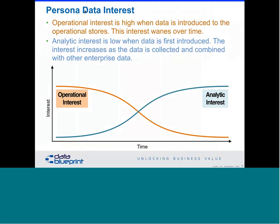If you notice where the lines cross versus where they start out: for the operational interest, the interest is highest when the data is most recent. Whereas with analytics, the interest is higher when the data exists for a period of time and knowledge can be gleaned from it. Transactional data, which is for operations, tends to be write-optimized — we're trying to get the data collected as fast as possible and into storage. Whereas with the analytical side, we're trying to get it read-optimized so that we can read the data as fast as possible. Operational: write. Analytic: read.